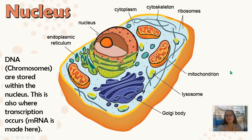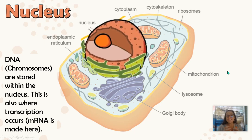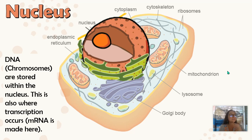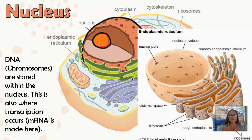Our first organelle is the nucleus. The nucleus is found within the cell and this is where the DNA is stored. Within the nucleus you will find chromosomes as well as the location where transcription occurs — where a messenger RNA is made and then used by a ribosome to make proteins. The nucleus is surrounded by what we call a nuclear envelope, which is made of a lipid bilayer, the same material as the cell membrane.